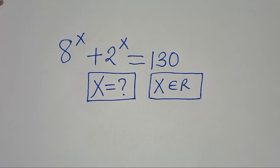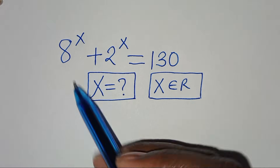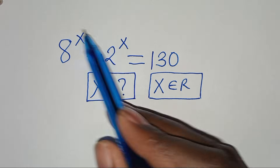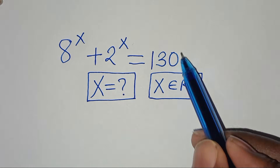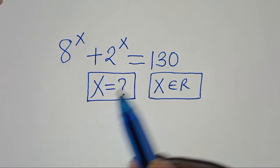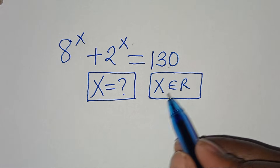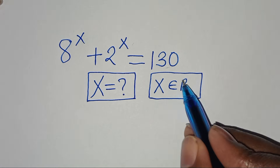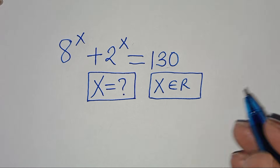Hello everyone, you are welcome to solve this nice math problem, which is 8 to the power of x plus 2 to the power of x. This is equal to 130. So what is the value of x, given that x is a member of real numbers?